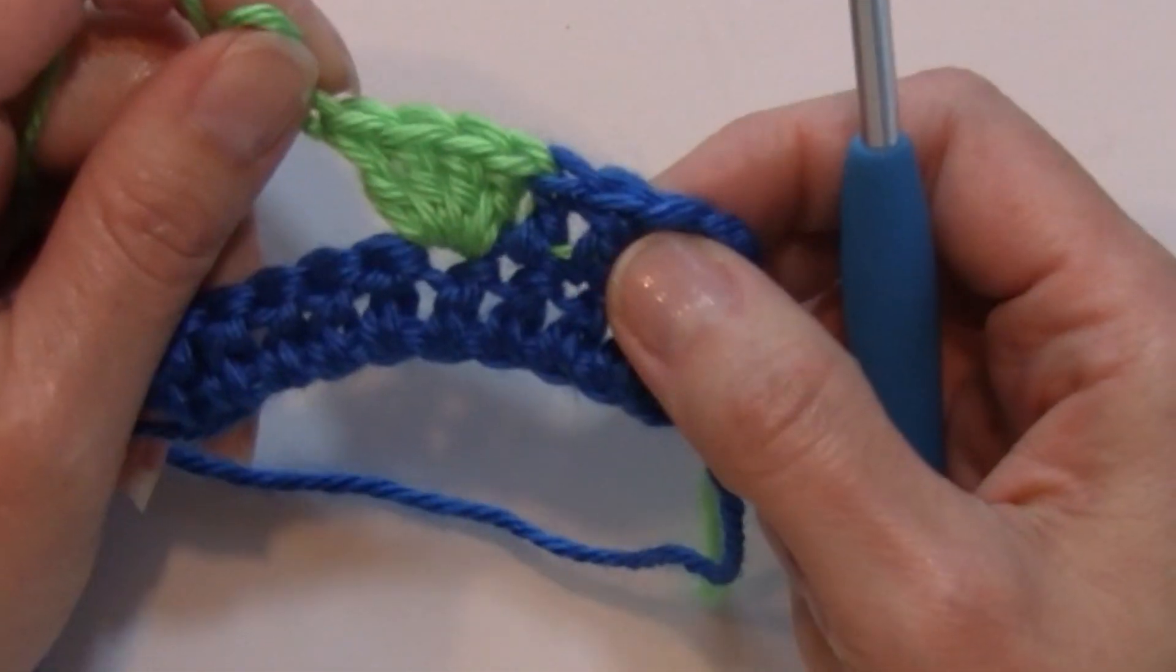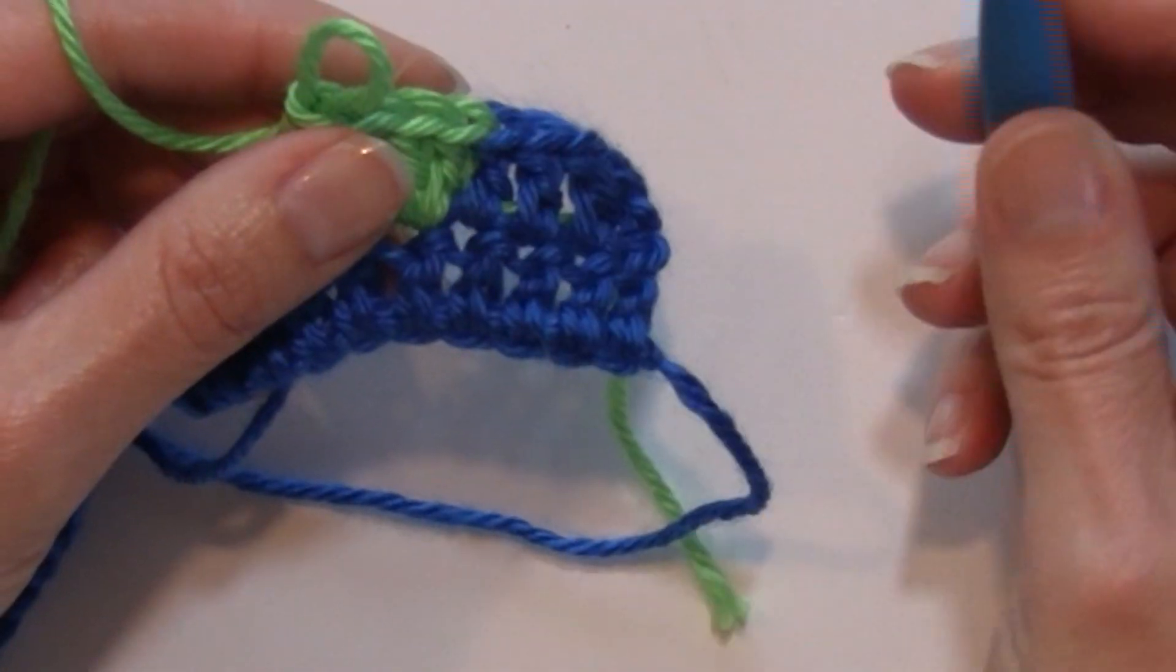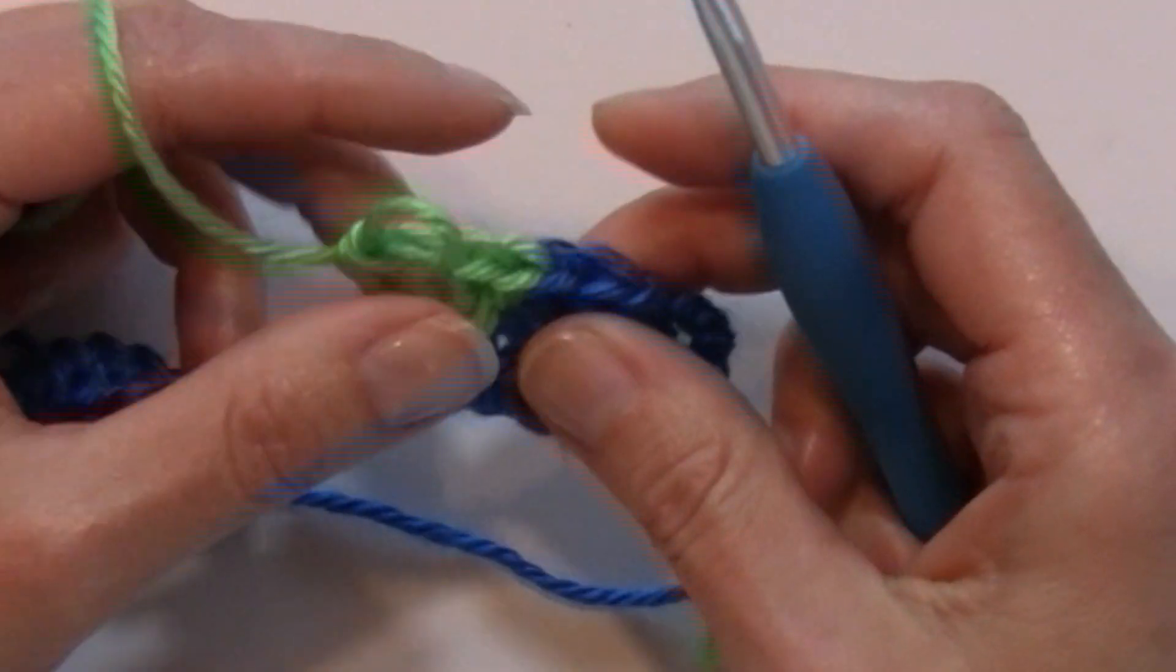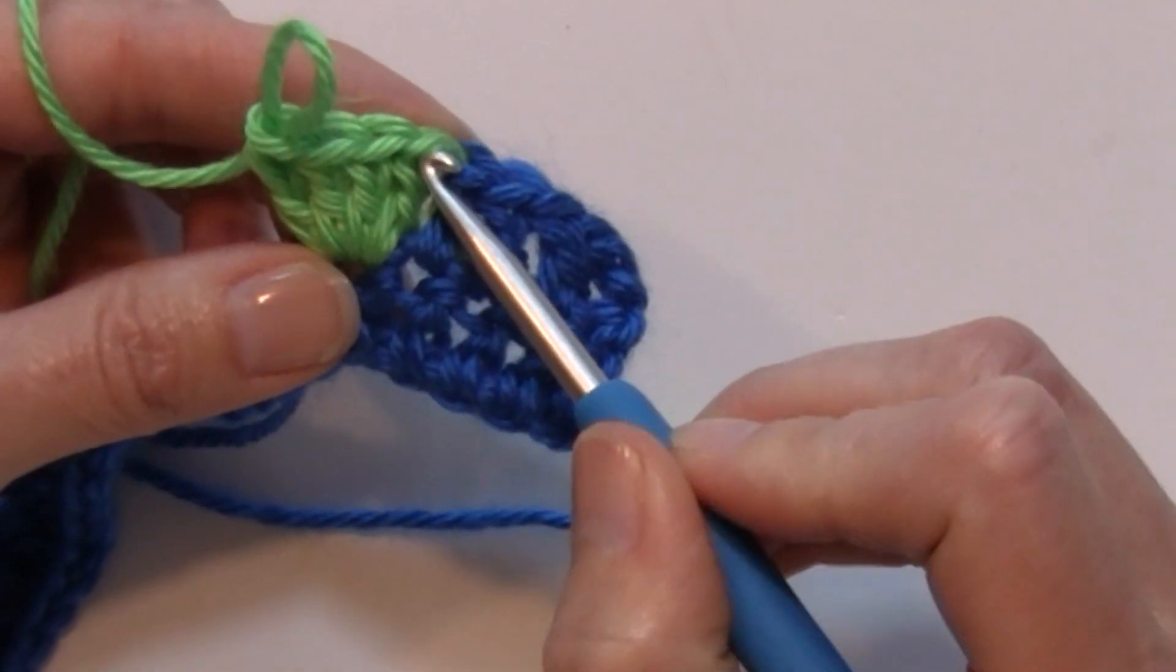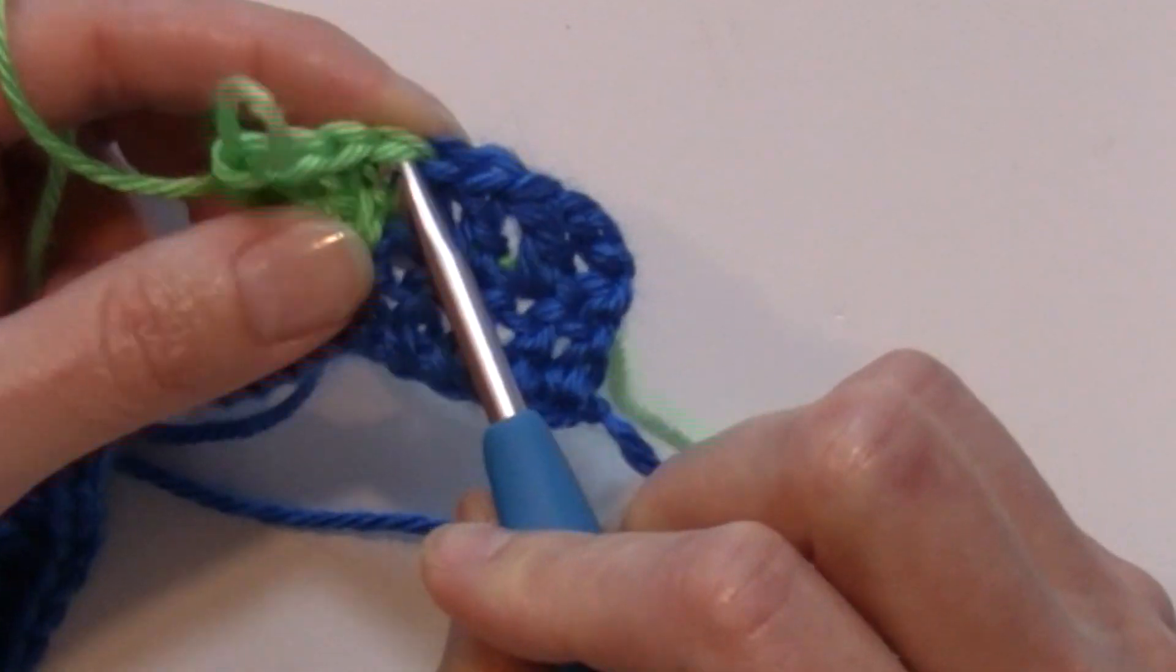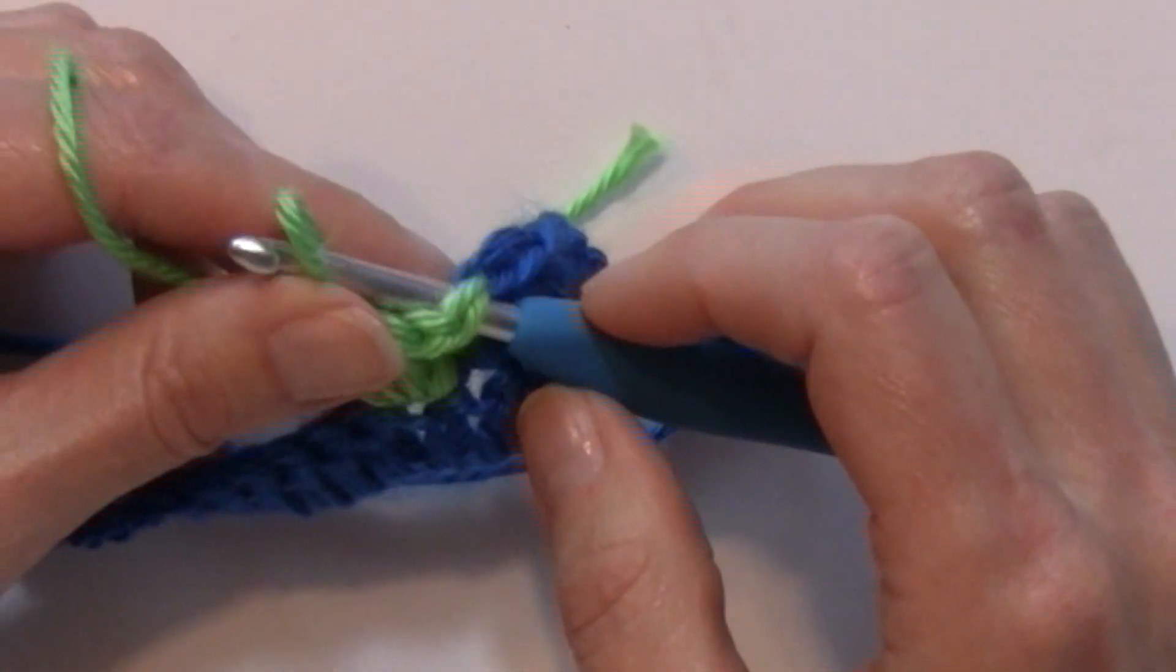Once I've completed that last double crochet, so I have four double crochets here, I'm going to take my hook out of that last loop, that final loop, and I'm going to insert it in the top of that first double crochet that I made and insert it back into that loop.